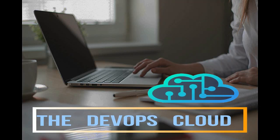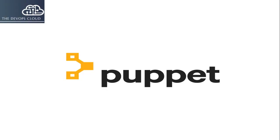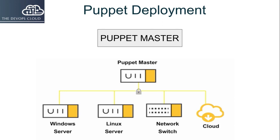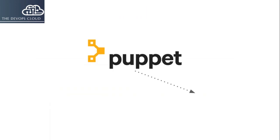Hello Puppet fans and welcome to this course on Puppet. Puppet is a leading IT automation platform in DevOps that is used to manage various stages of the IT infrastructure lifecycle, including the provisioning, patching, configuration, and management of operating system and application components across enterprise data centers and cloud infrastructures.